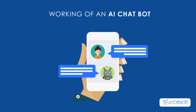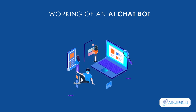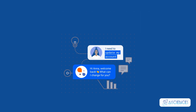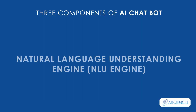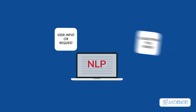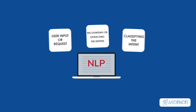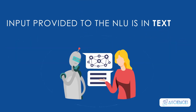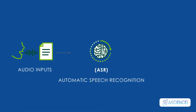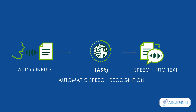Working of a chatbot. Let's have a look at the working of an AI-powered chatbot. AI-powered chatbot architecture is the mechanism that determines how a chatbot is going to work. Mostly it is developed on the basis of the client's requirements and the usage and context of business operations. Its architecture mainly depends on three components. The first is the Natural Language Understanding Engine, NLU — a subset of NLP — which is all about understanding the user input or request, classifying the intent, and recognizing or extracting the entities. An important thing to understand is that the input provided to the NLU engine is in the form of text. In the case of audio inputs, automatic speech recognition, ASR, is used to convert speech into text before feeding it to the NLU engine.